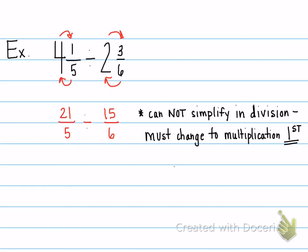You keep the first fraction exactly the same. So it stays 21/5. You change it to multiplication. And then the reciprocal of 15/6 is 6/15.